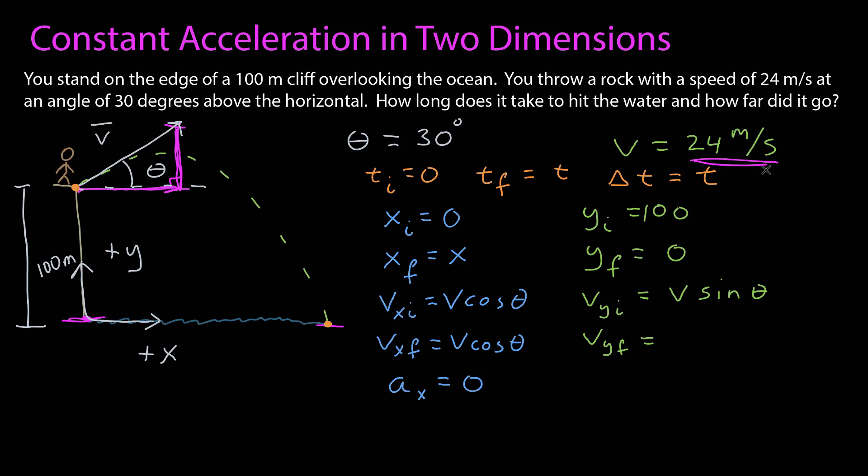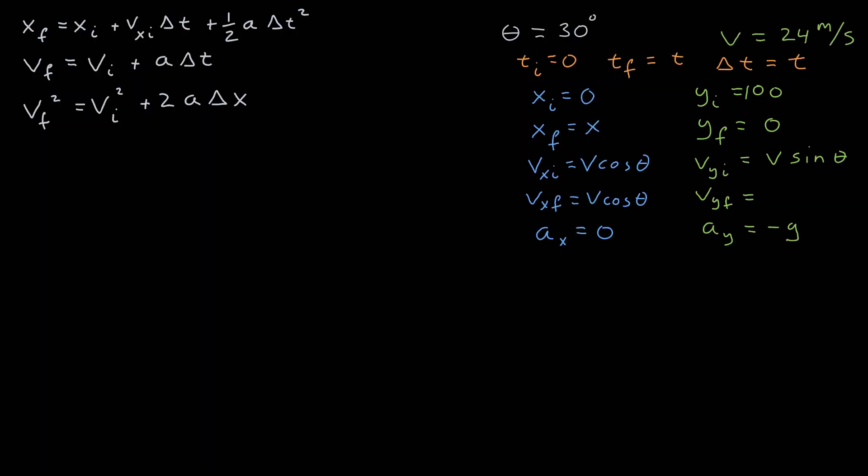I don't know the final y velocity, because it will be accelerating this whole time. I do know that the acceleration, given this coordinate system, will be negative g. So I've brought everything I know and everything I don't know together. And I have my constant acceleration relationships. I have the ones for x here. And of course, the ones for y look exactly the same with x replaced by y, and the x subscripts replaced by y subscripts.